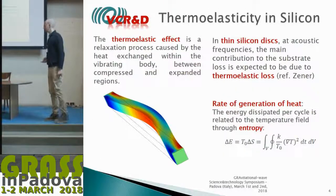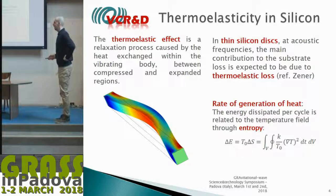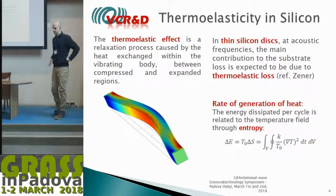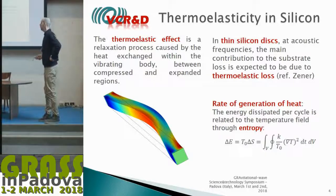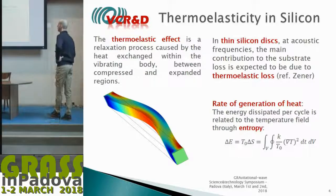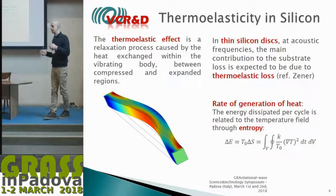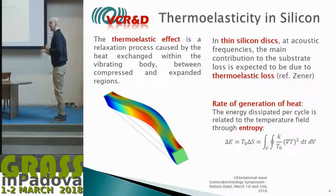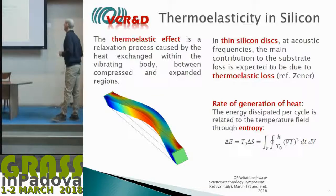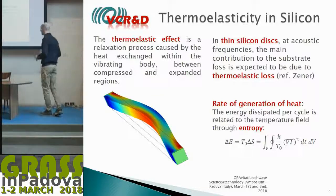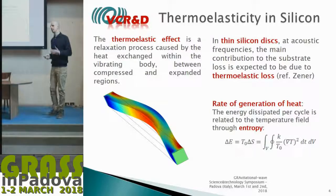Thermoelastic damping is an effect of heat diffusion inside the sample when it vibrates. It is due to a relaxation time that allows heat flow from the compressed part toward the expanded part of the vibrating body. In a silicon disk, due to the high thermal conductivity, this loss is the main contribution to the total loss of the substrate.